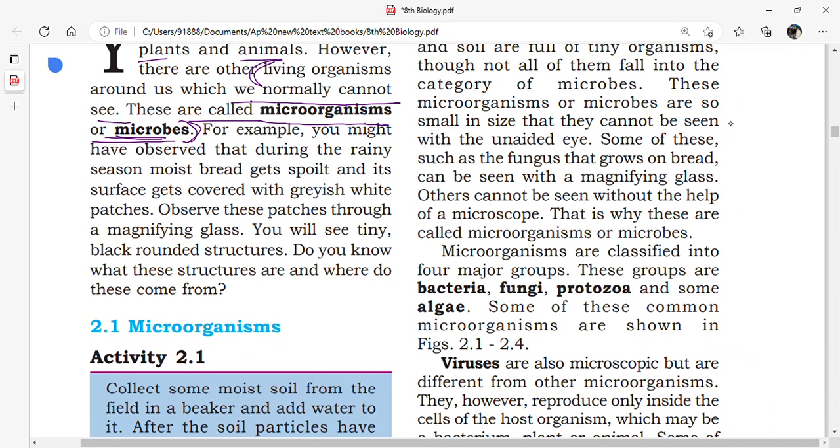In rainy season, moist bread gets spoiled and its surface gets covered with grayish white patches. If we observe the bread carefully in the microscope or with the help of a magnifying lens,